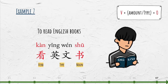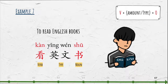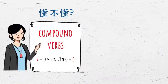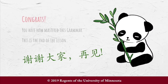Please note: verb-object compounds already consist of an object within the word. They cannot take any more objects outside of this construction. This is the end of the lesson.